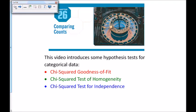This video is about chapter 26, and in this chapter we will begin to look at some chi-squared tests. We'll talk about three specifically: the chi-squared goodness-of-fit test, the chi-squared test for homogeneity, and the chi-squared test for independence.